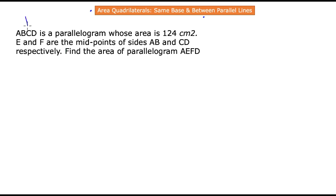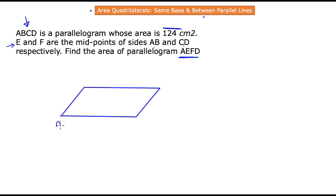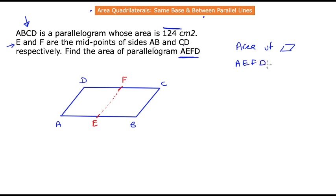Now let's look at an example problem. Parallelogram ABCD has an area of 124 cm². E and F are the midpoints of sides AB and CD respectively. Find the area of the parallelogram formed by A, E, F, and D. First, draw the parallelogram ABCD, mark midpoints E on AB and F on CD, and join them to complete the diagram.